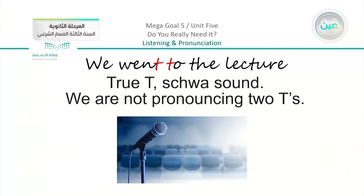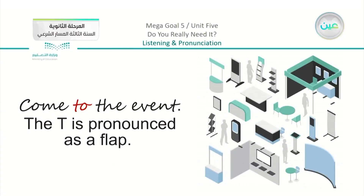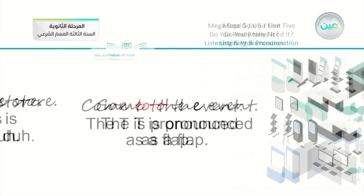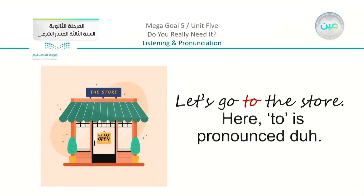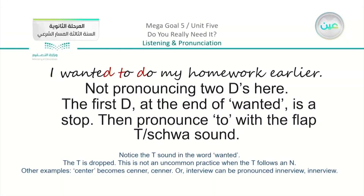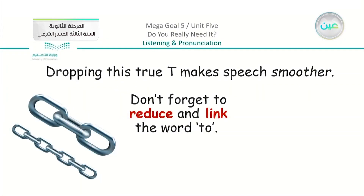We learned how to link the word 'to' with other words within speaking. We have an exercise in the book. As examples from yesterday: 'We went to the lecture' — just one T sound. 'Come to the event' — there's a flap sound. 'Let's go to the store' — there is the D sound. 'I wanted to do my homework earlier' — 'wanted' changes in pronunciation and the T can disappear. Dropping this true T makes speech smoother, so don't forget to reduce and link the word 'to.'